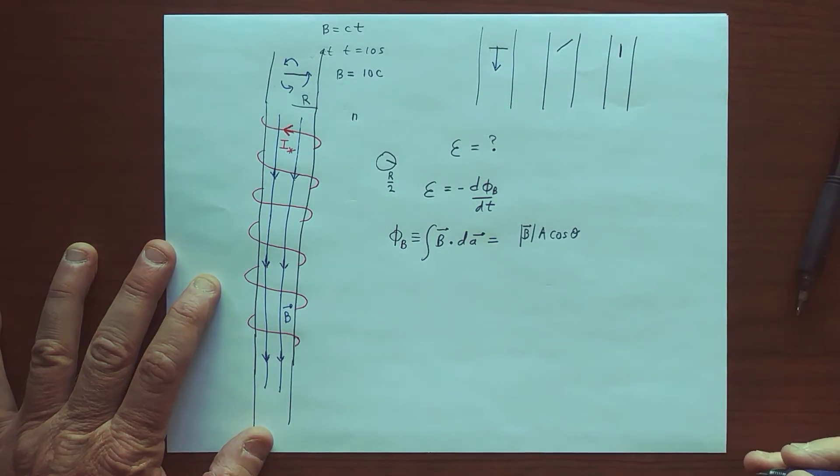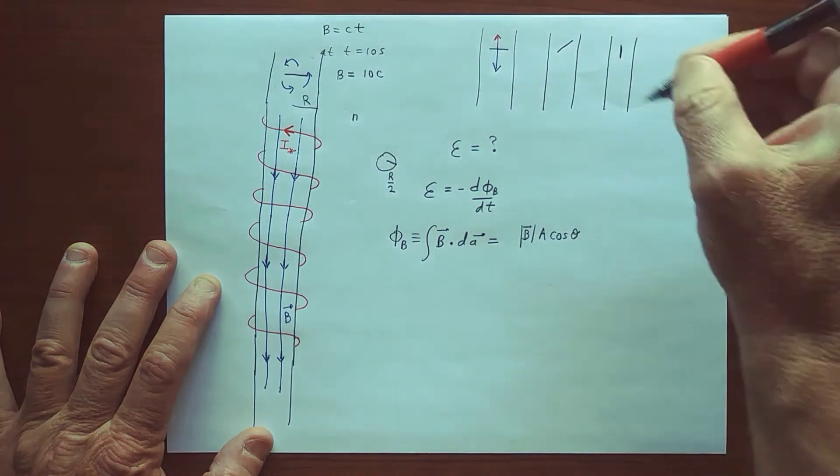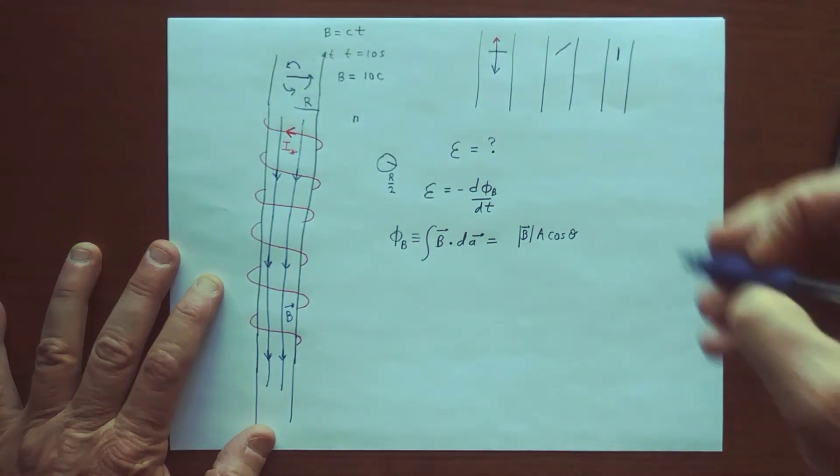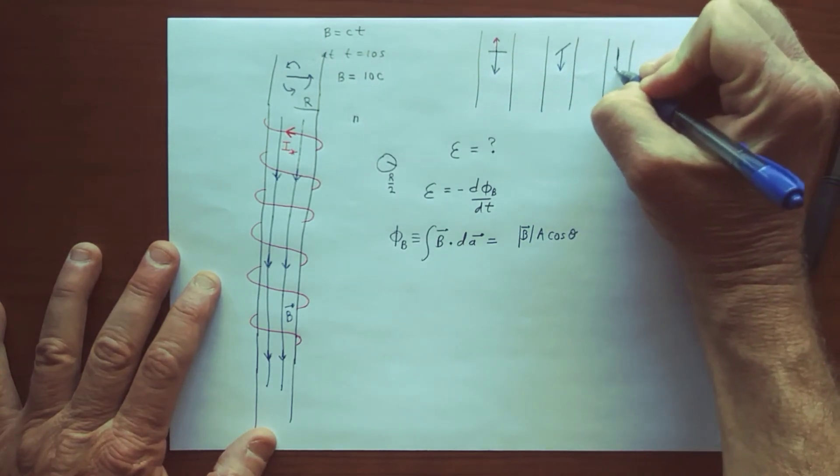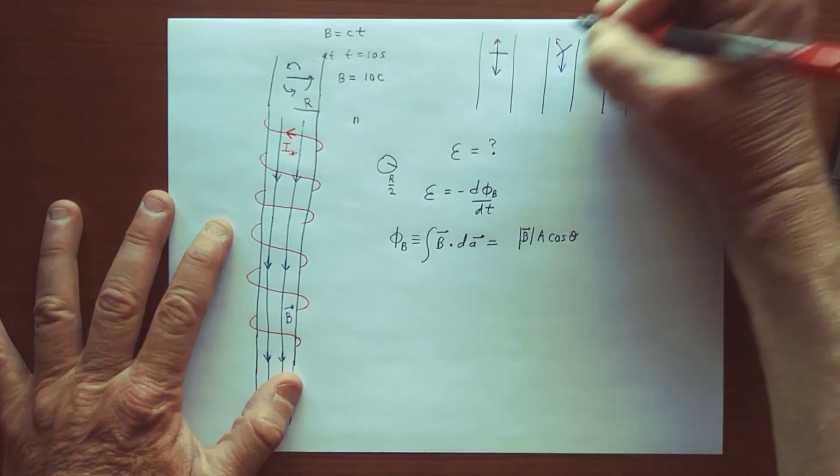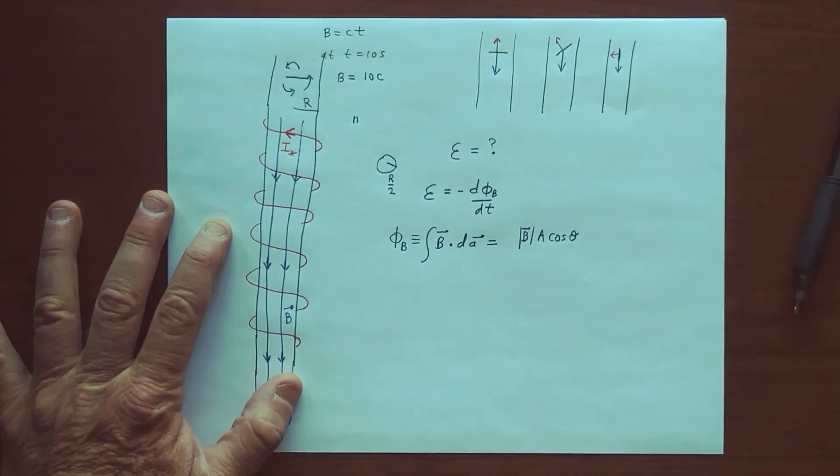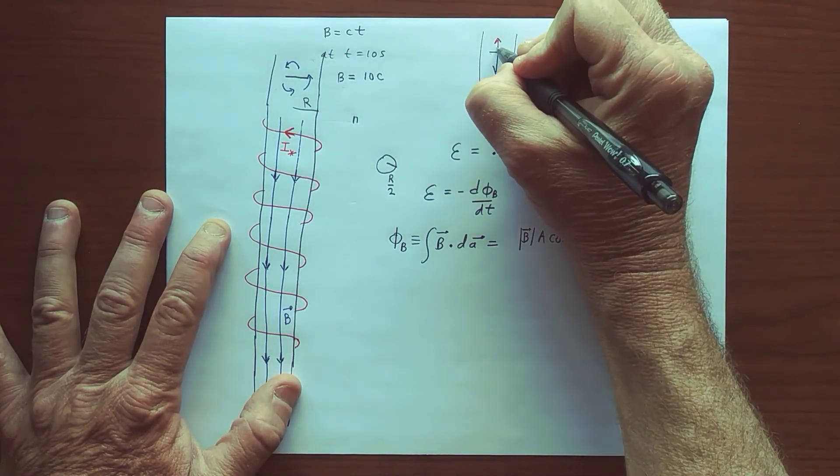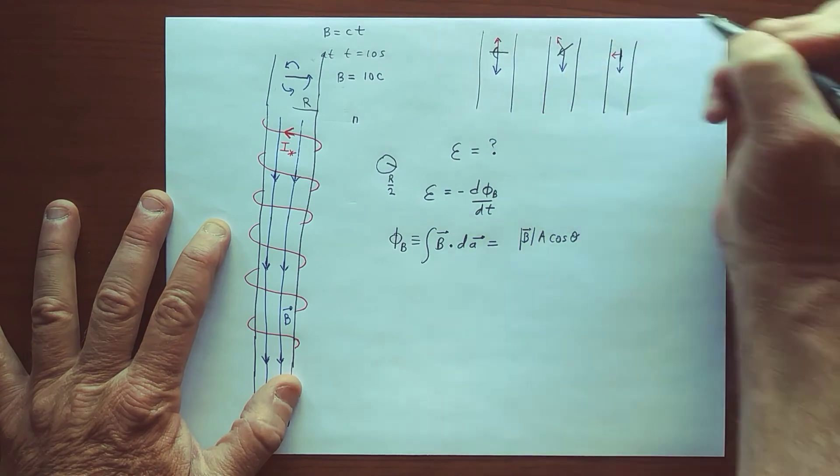So if in this configuration right, the magnetic field is that way, and the normal to the surface is that way, and then the magnetic field always has the same direction, so it's always straight down at the coil. But the normal to the surface is changing direction, so that angle, which is this angle right, has different values.